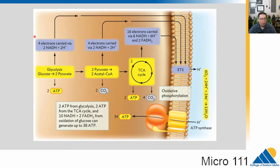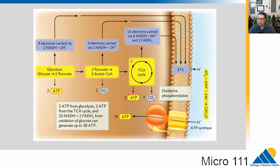Let's reorient ourselves with what's gone on. We had glycolysis — glucose was broken down into 2-pyruvate, a little bit of ATP got made, and we produced some stored electrons. Same thing when converting pyruvate to acetyl-CoA: mainly stored electrons. Then the TCA cycle: a little bit of ATP gets made, but mainly stored electrons. Those electrons in NADH and FADH2 move to the membrane, the electron transport system uses this stored energy to pump hydrogens outside the cell, they flow back in through ATP synthase, and we get up to 34 ATP.